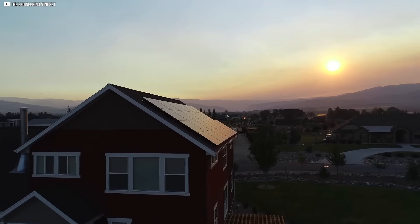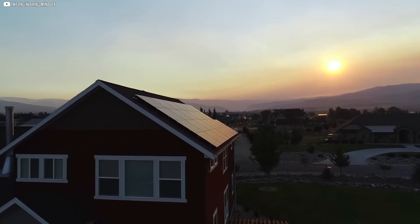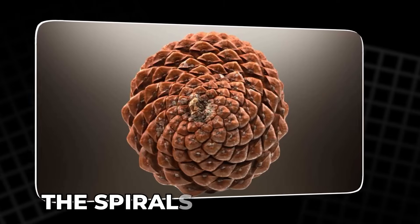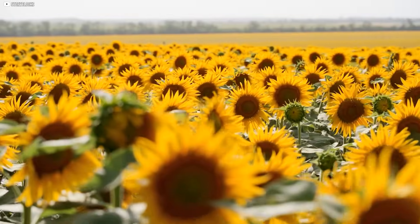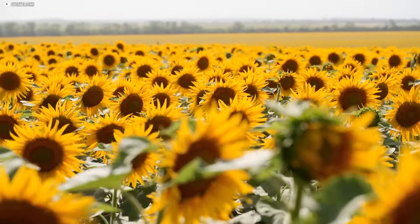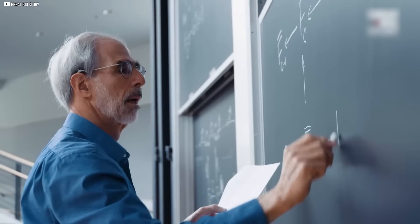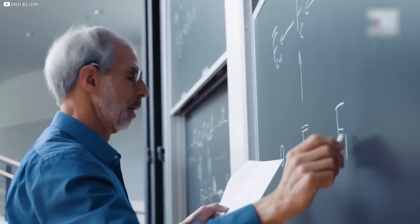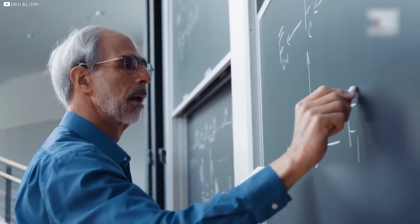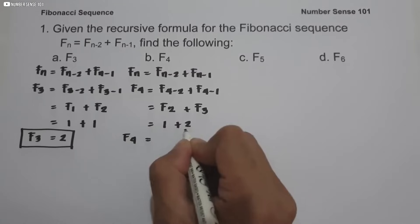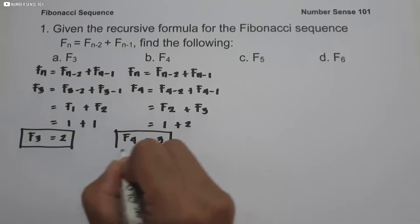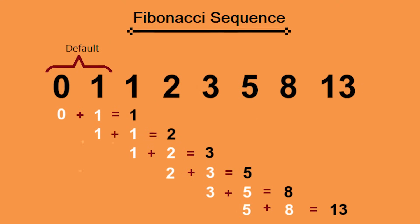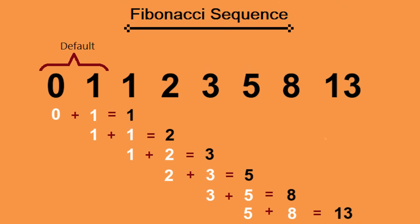You'll often see it in the natural world. The spirals on pine cones, the arrangement of seeds in a sunflower, and even the curves of seashells all follow this sequence. The Fibonacci sequence is more than just a curious pattern — it's a fundamental part of nature's design.